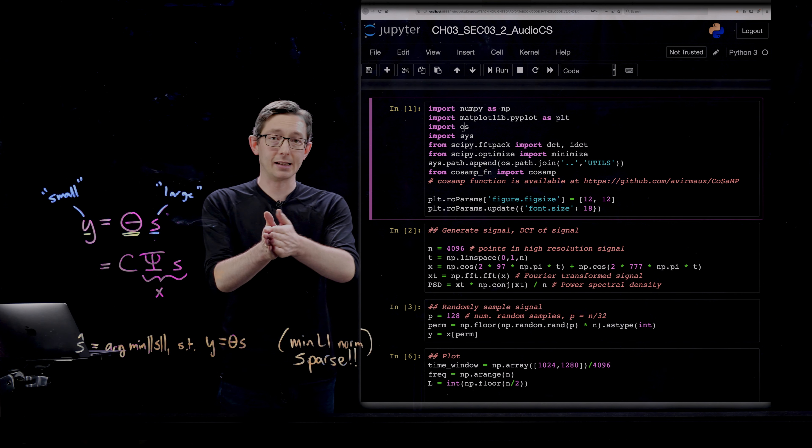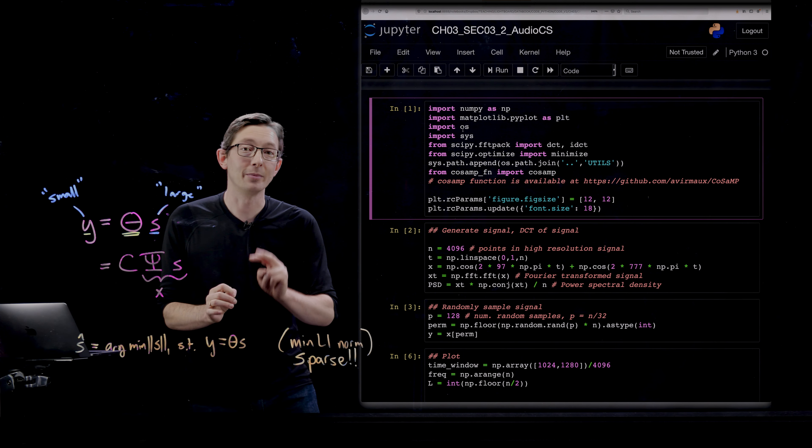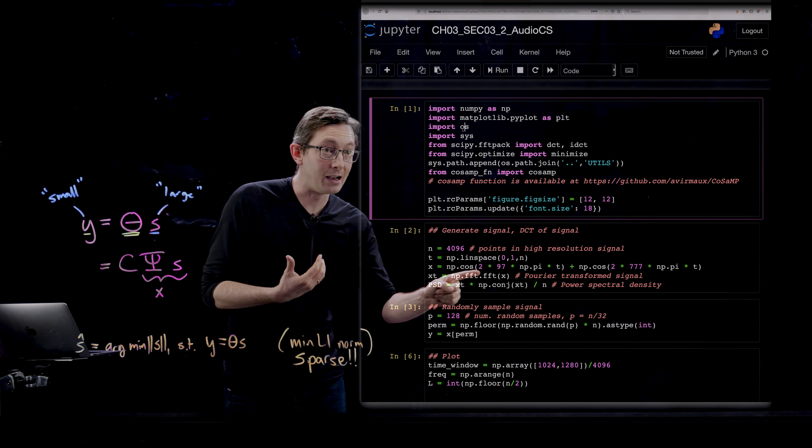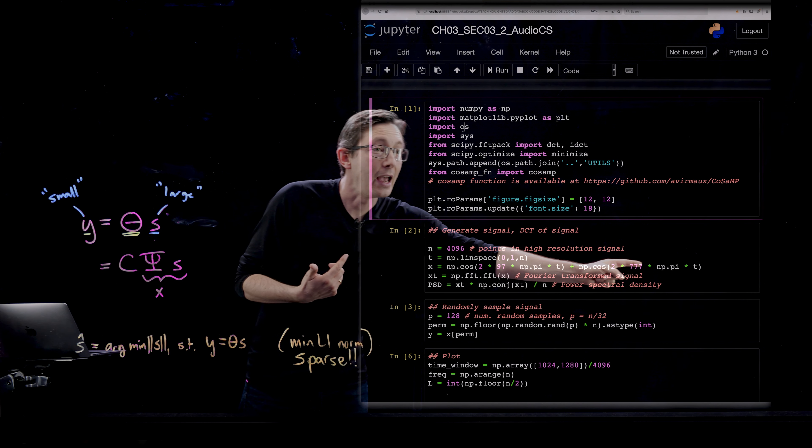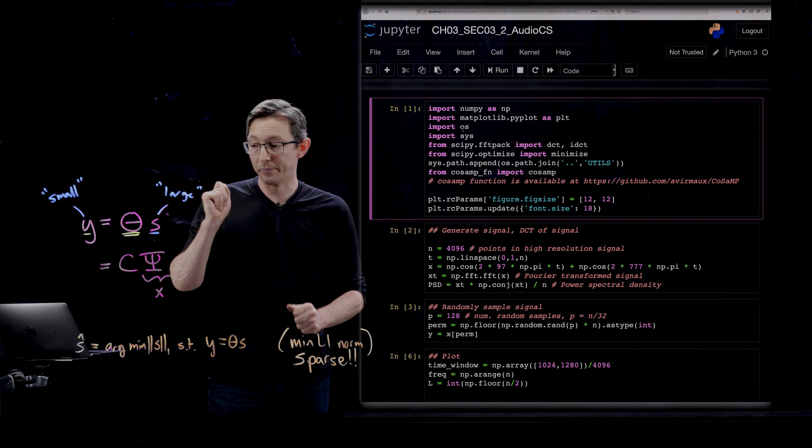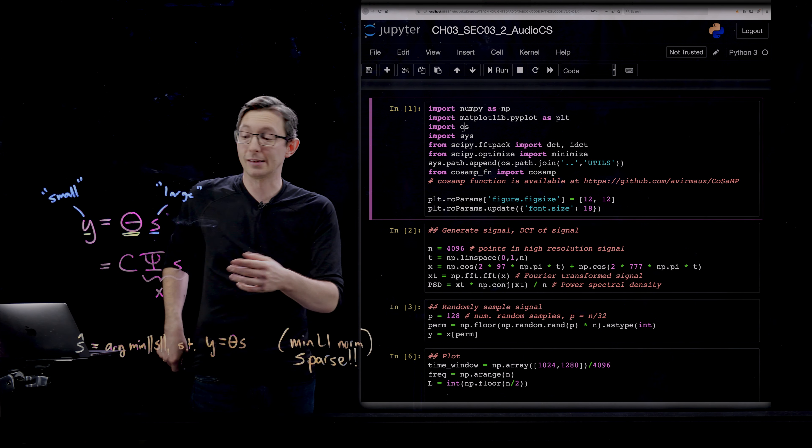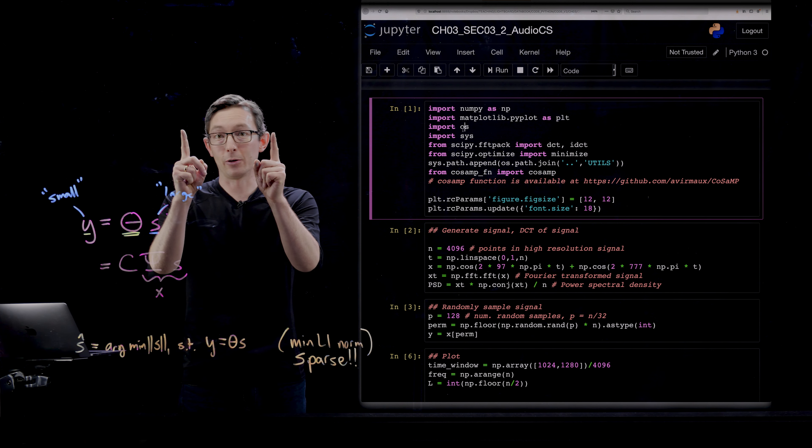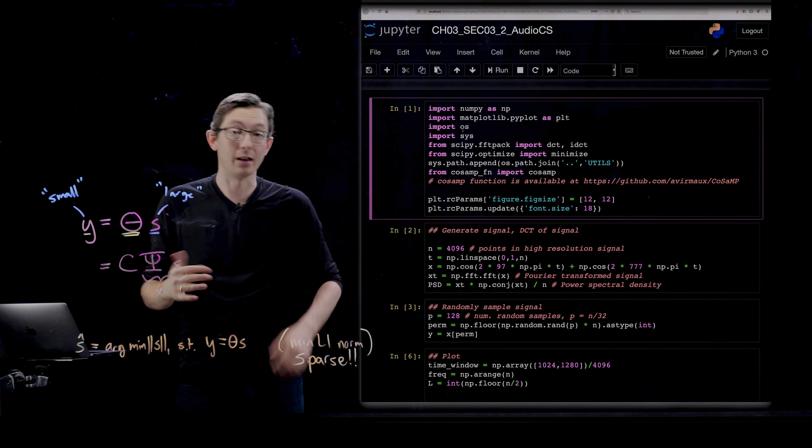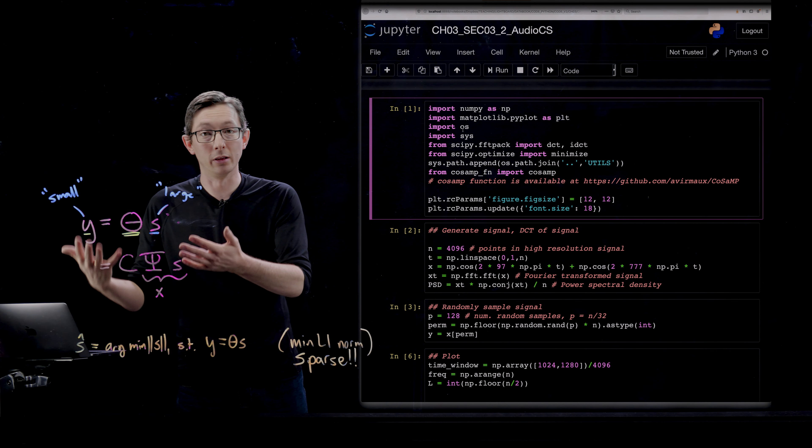So what we're going to do is create a signal in time, an audio signal that is very sparse in Fourier. In fact, it's going to be a two-tone audio signal created by taking the sum of a 97 hertz cosine wave and a 777 hertz cosine wave. This signal is ultra simple. In the time domain it's just a sum of two cosine waves, and in the Fourier domain it's going to have two power peaks at 97 and 777 hertz. Very sparse. This is a toy problem that illustrates what an audio signal reconstruction problem would look like.